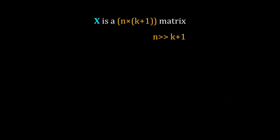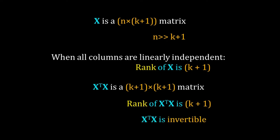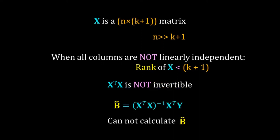So what happens when we have such linear dependencies? X is an n by k+1 matrix with n > k. When all columns of X are linearly independent, the rank of X is k+1, X^T*X is a (k+1) by (k+1) full-rank matrix, and it is invertible — which we need to calculate b_hat. But when columns of X are not linearly independent, the rank of X is less than k+1, X^T*X is not invertible, and we cannot calculate b_hat.